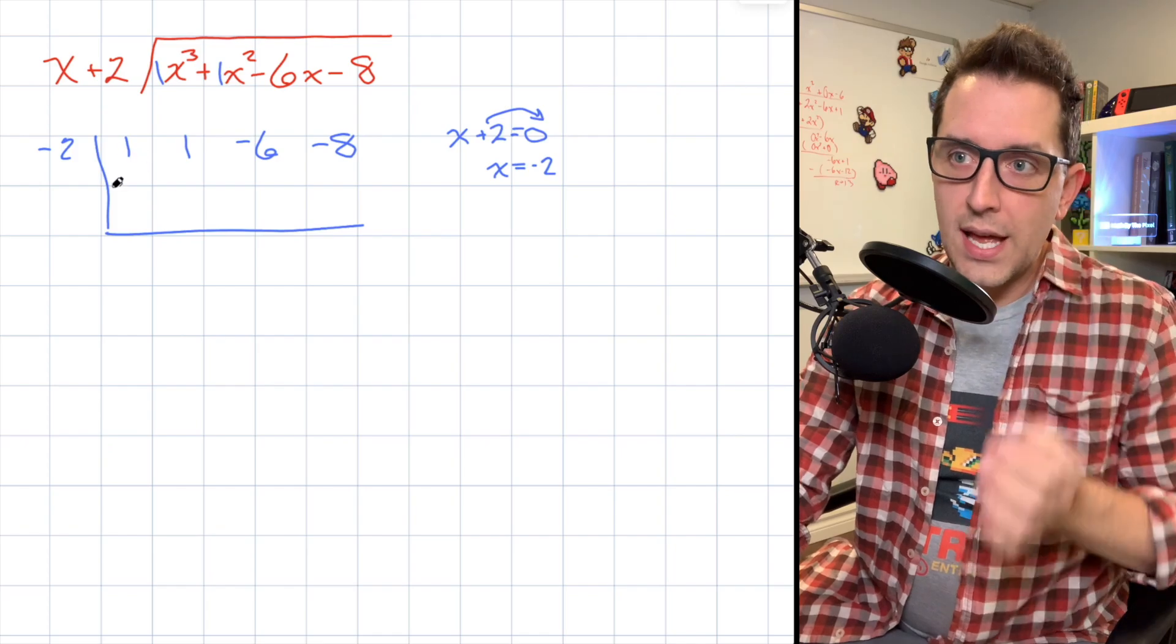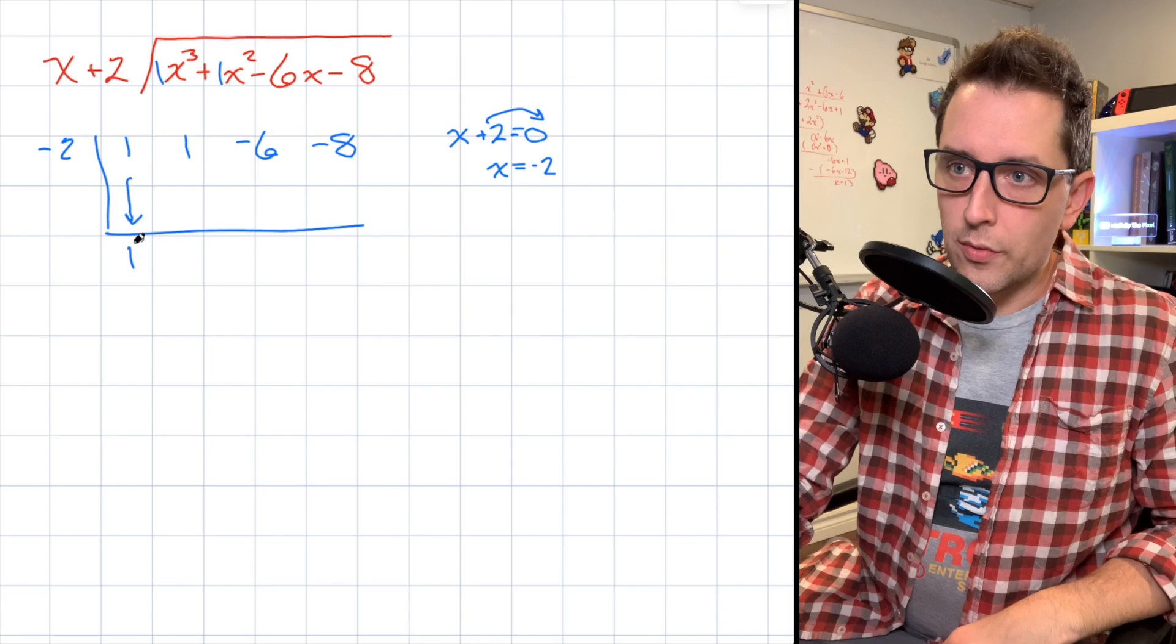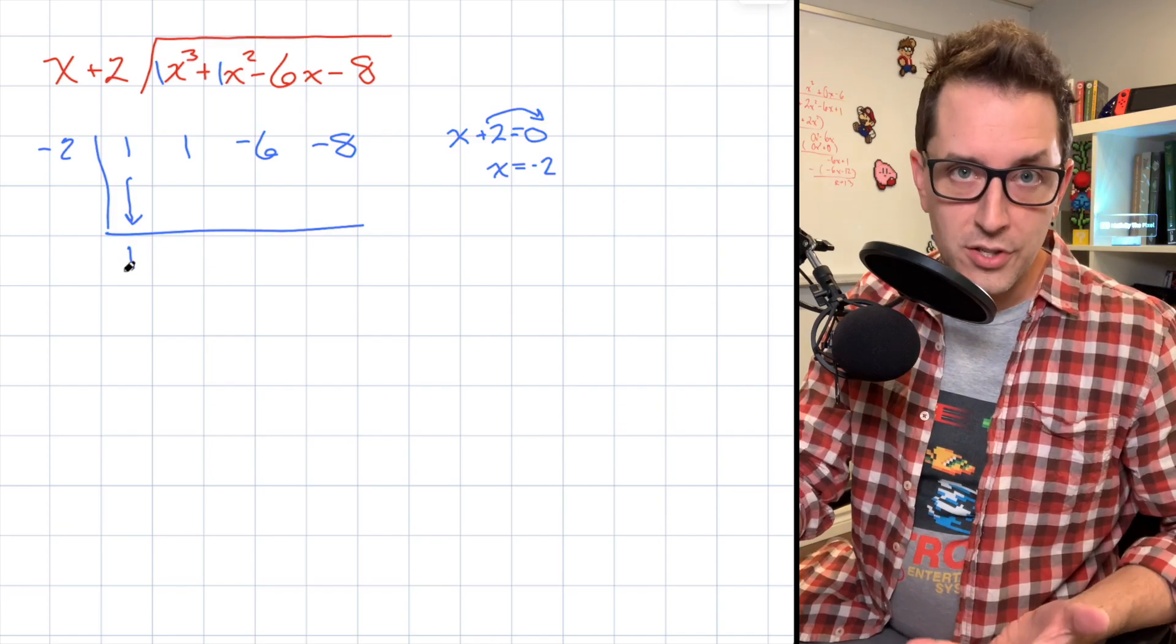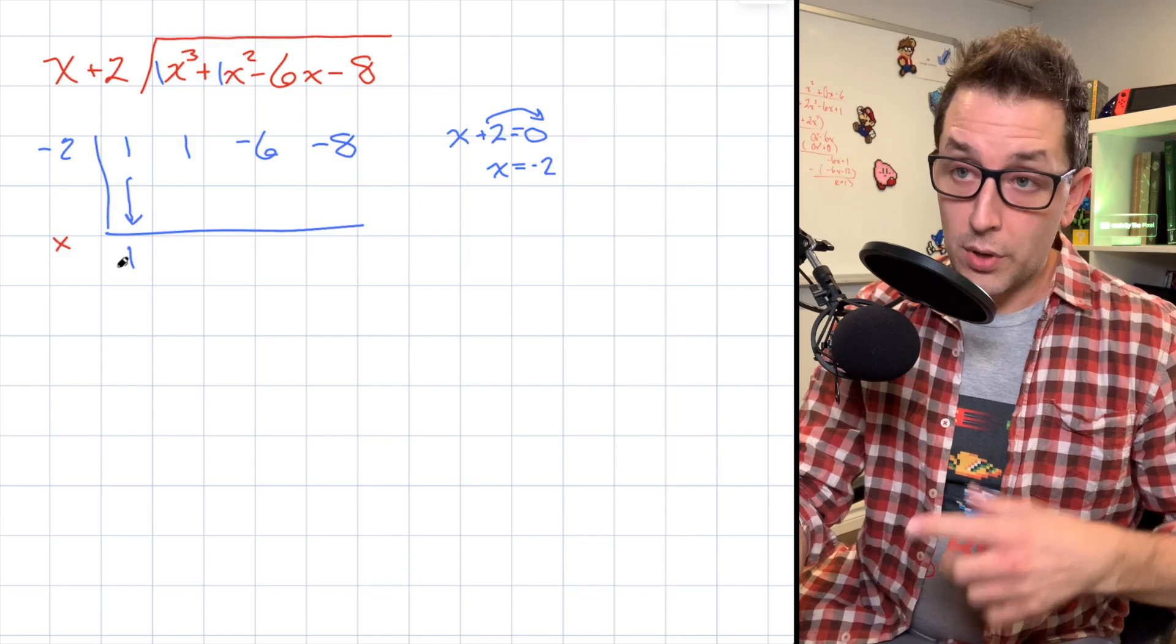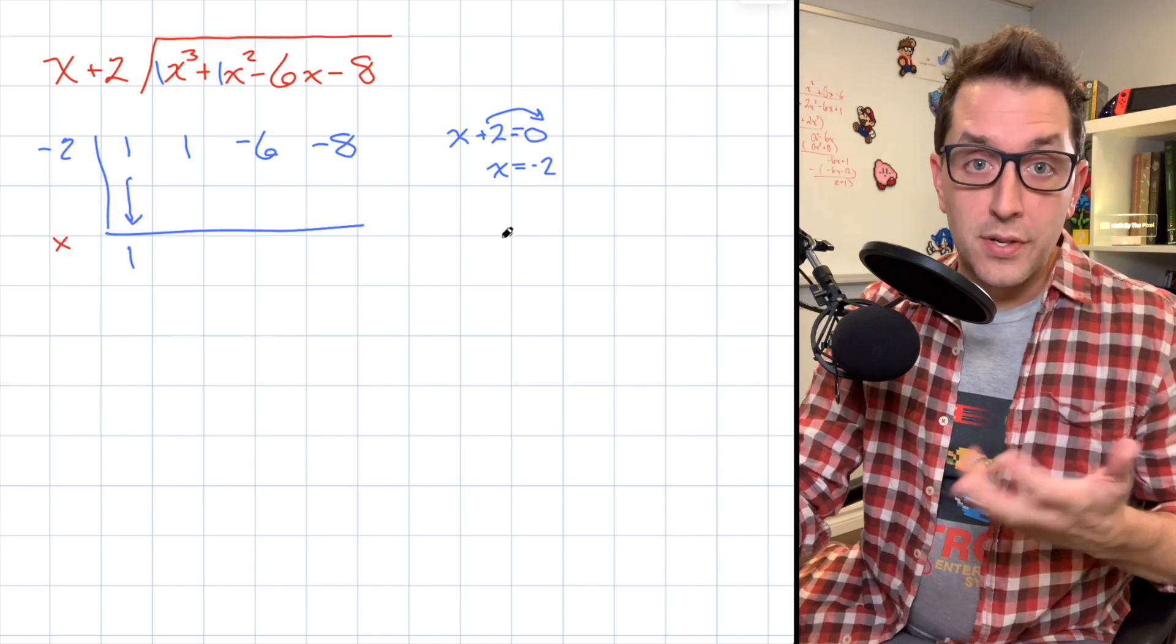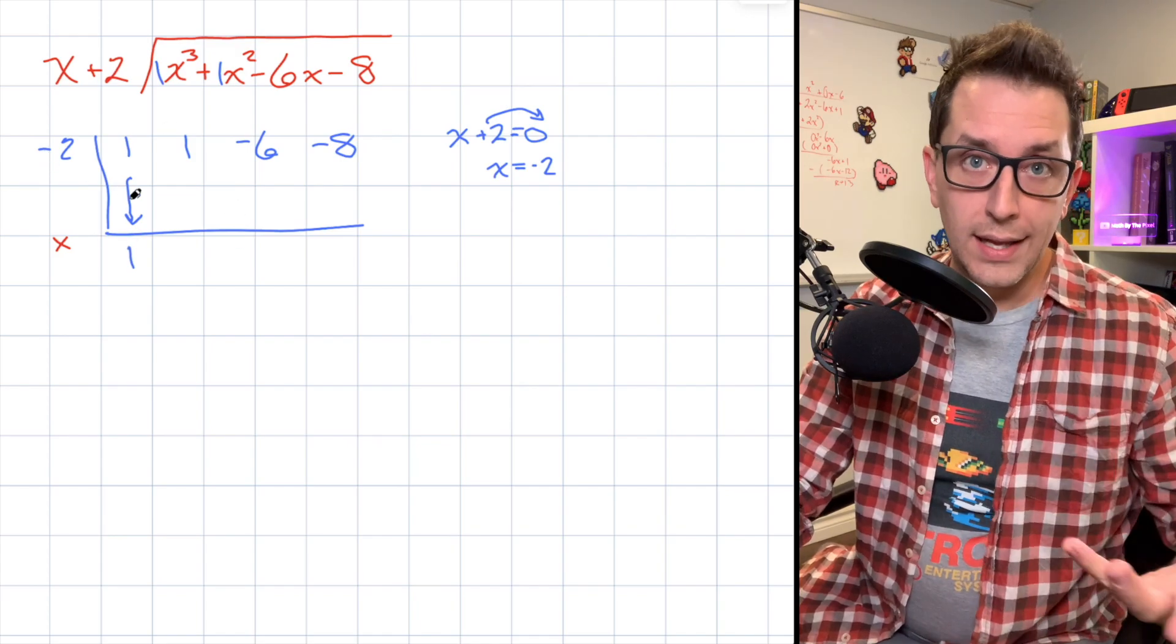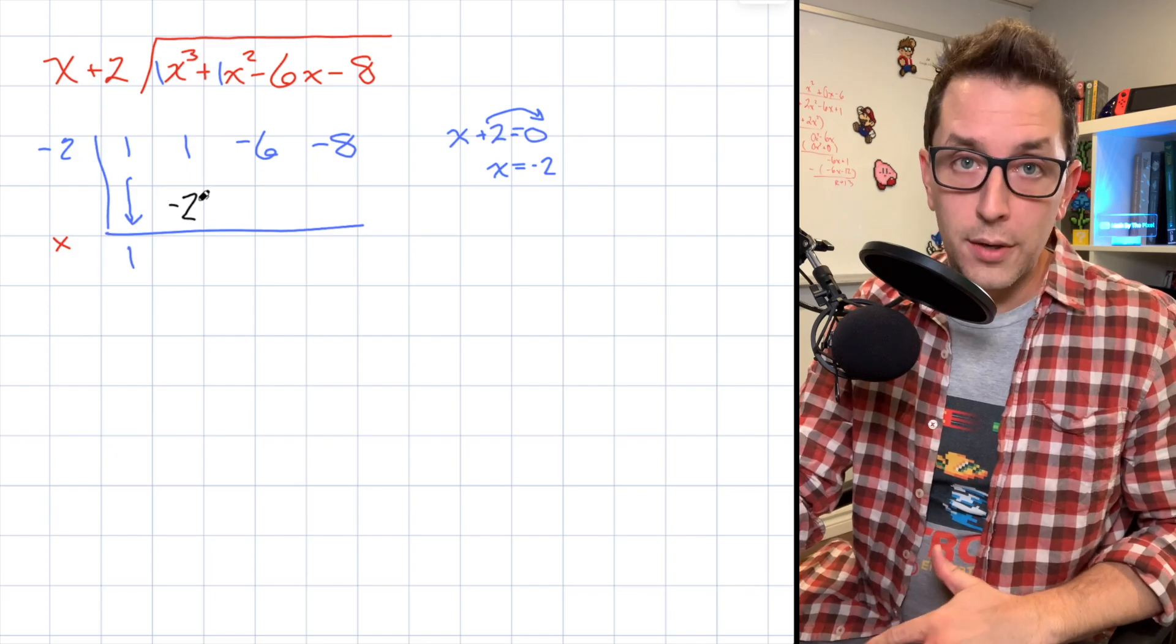First thing you're going to do with your table is take that first coefficient of 1, and you're just going to bring it down and place it right here underneath your synthetic division table. So I've done that here. Now we're going to take that 1, and we're going to multiply it by this -2 that we got over here from setting our divisor equal to zero. So when I take 1 and multiply by -2, I get -2, and I'm going to place that result right here underneath the second coefficient of 1.